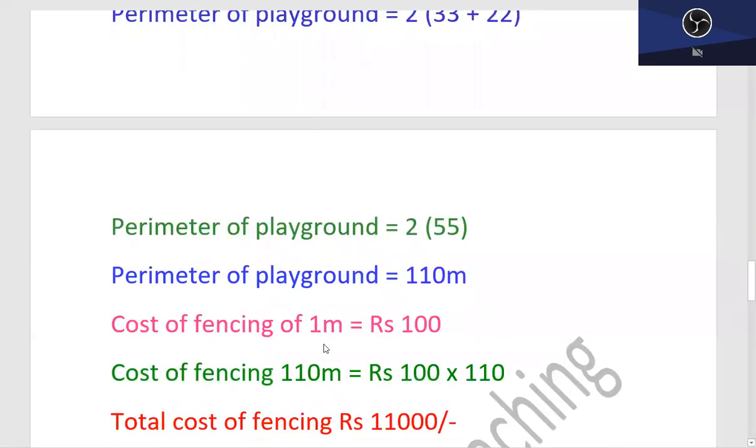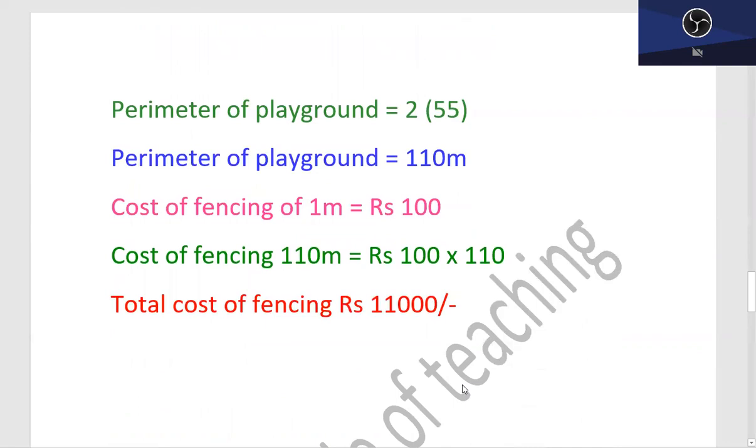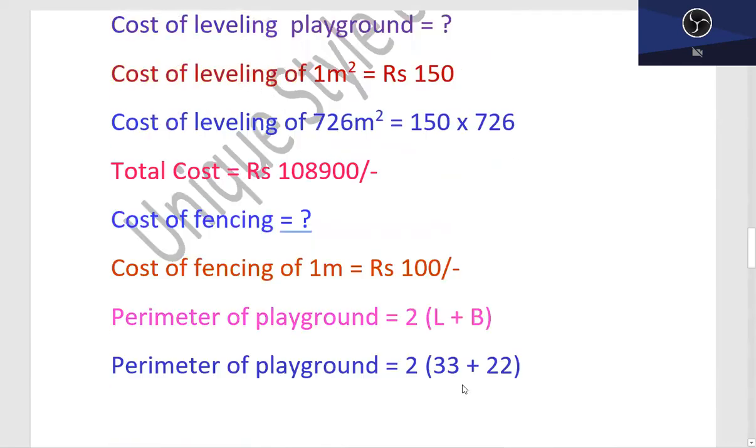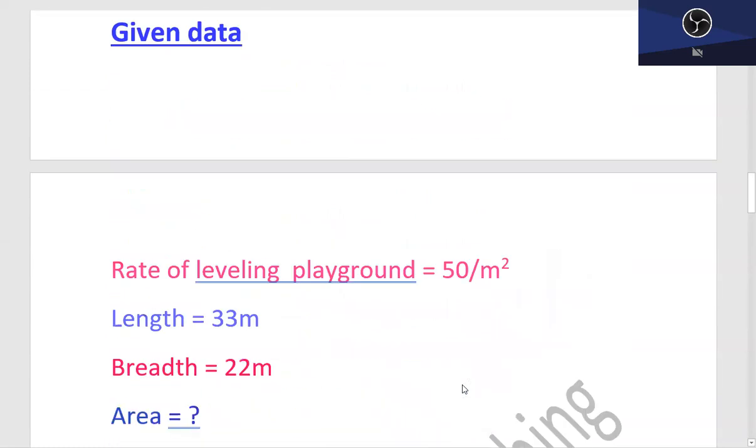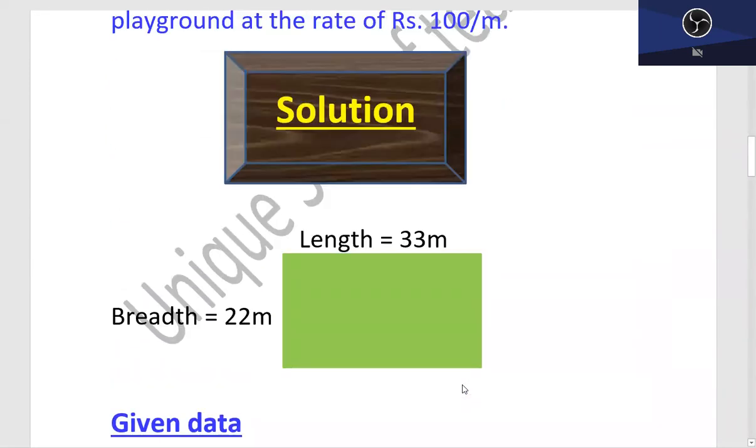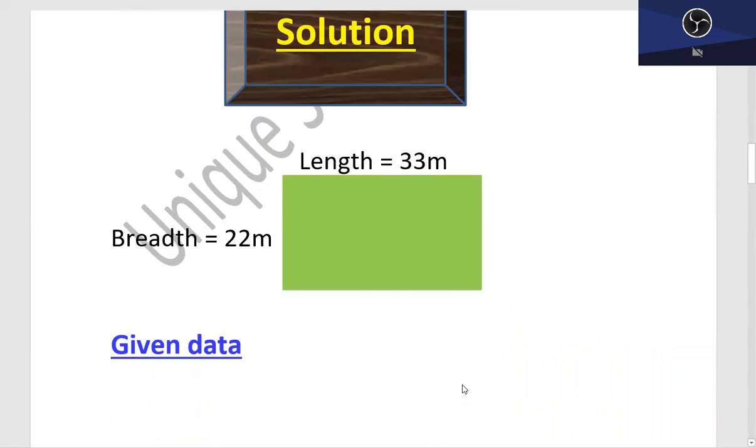Cost of fencing of 1 meter is rupees 100. Fencing jo hum chah rahe hain wo hai 110 meter pe, equals 100 into 110. 11,000 will be the total cost of fencing. Review karna chahein to aap dekh lijiye, write on karna chahein to aap apne is solution ko write on bhi kar sakte hain.